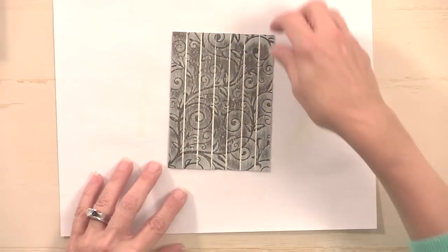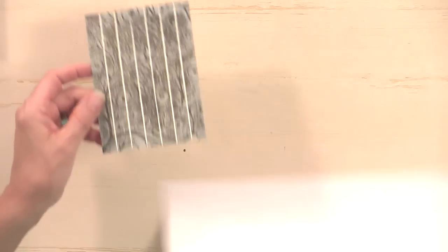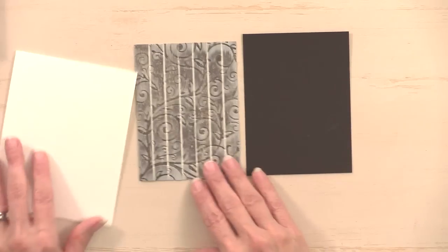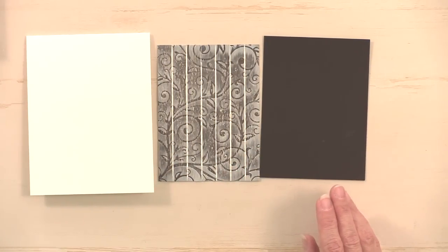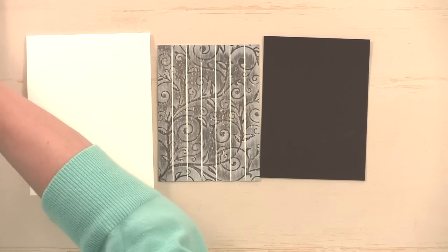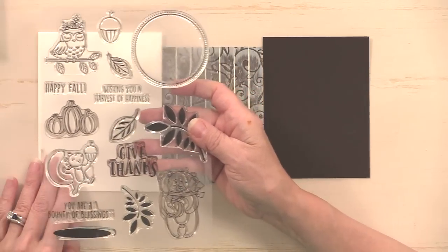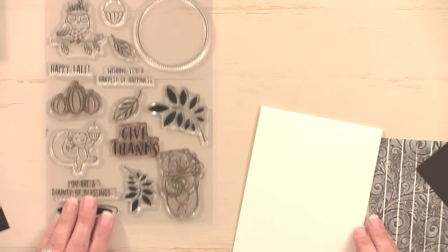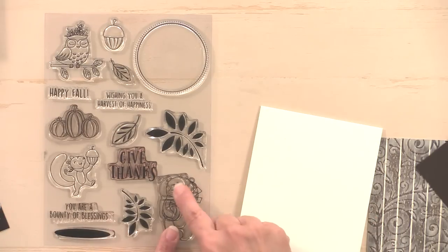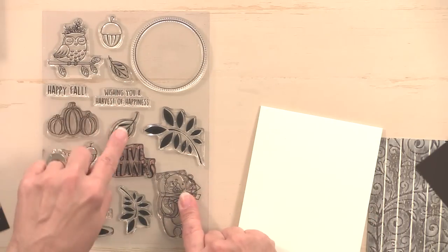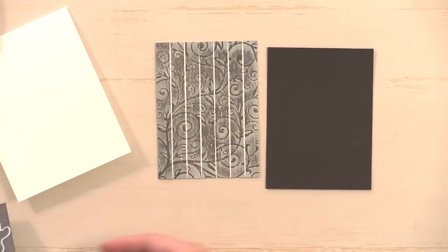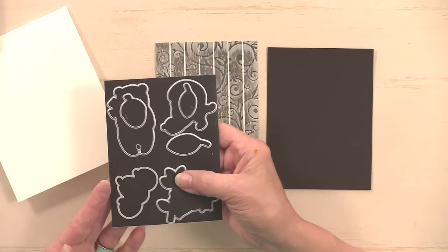Now I'm going to assemble this into a card. I have a piece of dark chocolate cardstock and then I have an ivory card base. The stamps that I used for this are from the Give Thanks stamp set. This is from the new Stamp TV kit, the Painted Autumn kit. The stamps that I used are the bear, these leaves, and some pumpkins. I pre-stamped all of these and colored them because I wanted to focus more on the technique. Then I cut them out with the set of dies that comes in the kit.